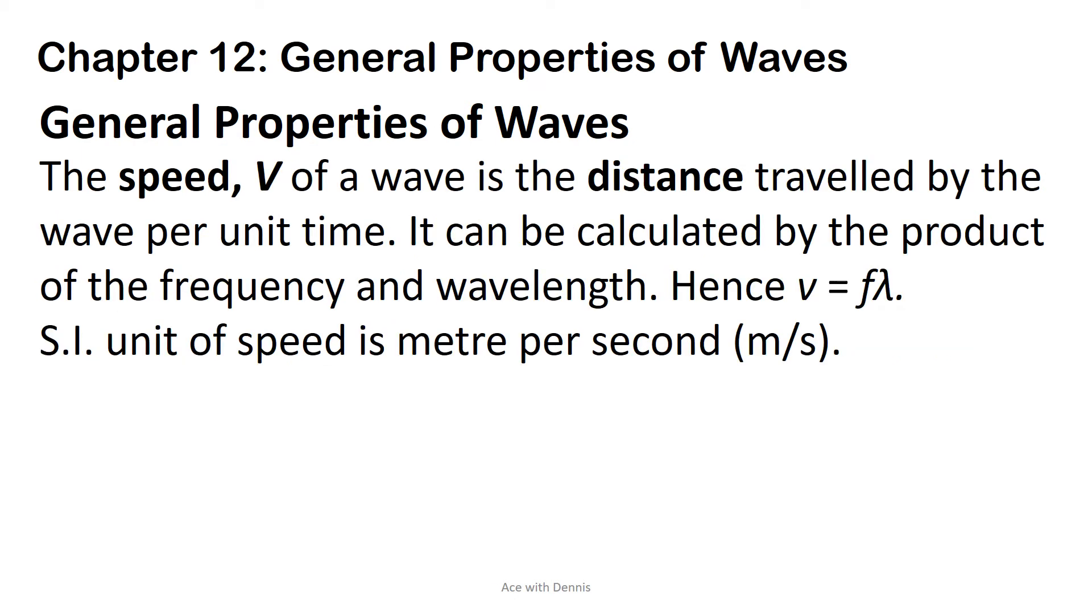The speed, V, of a wave is the distance traveled by the wave per unit time. It can be calculated by the product of the frequency and wavelength. Hence V equals F lambda. SI unit of speed is meter per second.